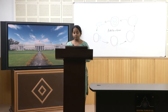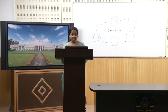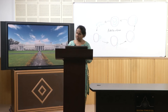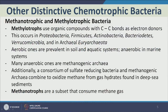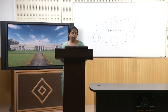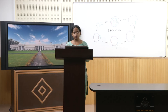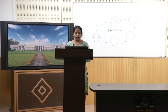These bacteria span very broad phyla including Proteobacteria — which is itself phylogenetically diverse encompassing alpha, beta, delta, gamma, and epsilon subdivisions — Firmicutes, Actinobacteria, Bacteroidetes, Verrucomicrobia, and Euryarchaeota. Aerobic ones are prevalent in soil and aquatic systems, while anaerobic ones are found deep in oceans and marine systems. Many anaerobic ones are methanogenic archaea — methylotrophs that use two-carbon chemicals as an electron source produce methane. Additionally, sulfate-reducing bacteria and methanogenic archaea combine to oxidize methane from gas hydrates found in deep sea sediments, a recent discovery where they form a consortium because the delta G alone is not feasible enough for this reaction.